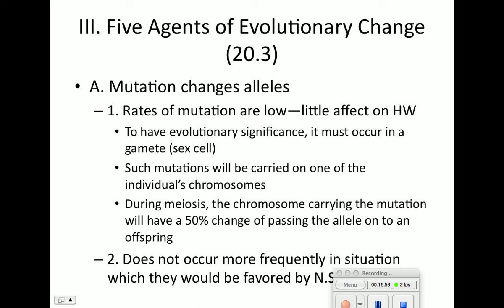The first agent is mutation. Mutation does change alleles, but rates of mutation are actually really low, which means it has little effect on Hardy-Weinberg. For a mutation to have significant evolutionary impact, it needs to occur in the gametes — the egg or sperm — so it can be passed on. Even if the mutation occurs in a gamete, there's still a 50/50 chance it will be passed on. Therefore mutation does not occur frequently enough to be a major driver alone.